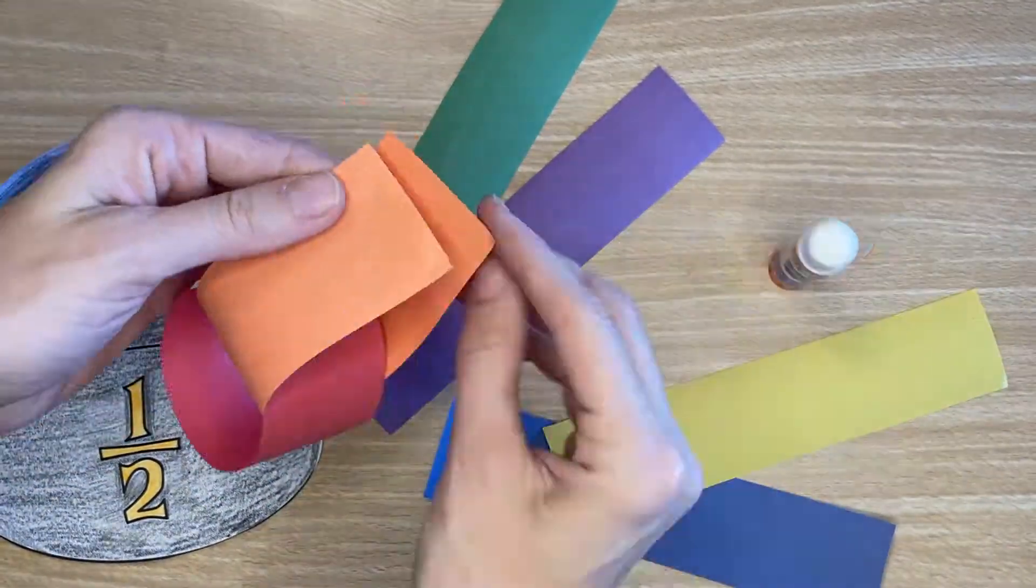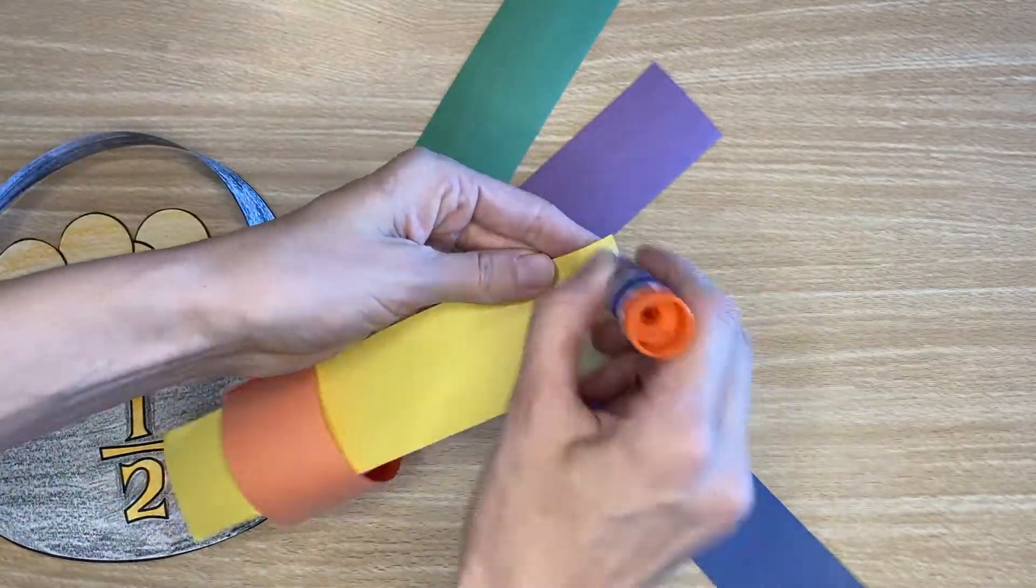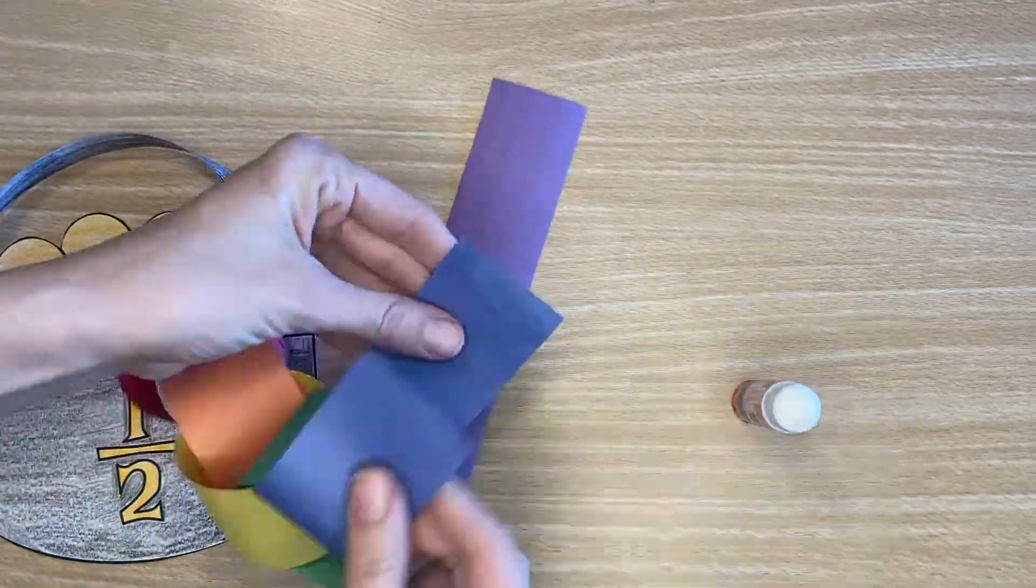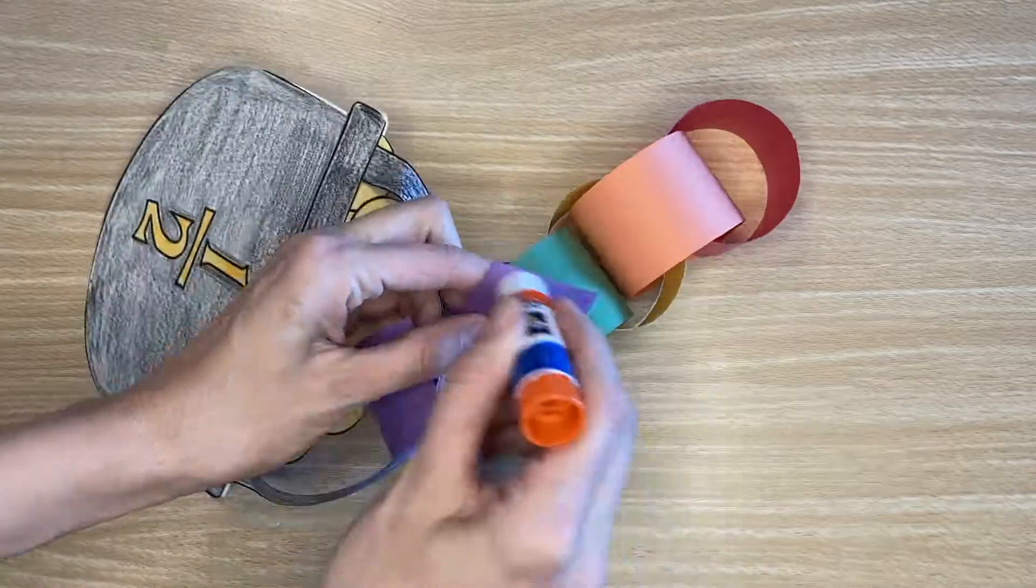Next roll and glue the paper strips to create a paper chain in rainbow colors. Be sure to attach the final link to the handle of your pot of gold.